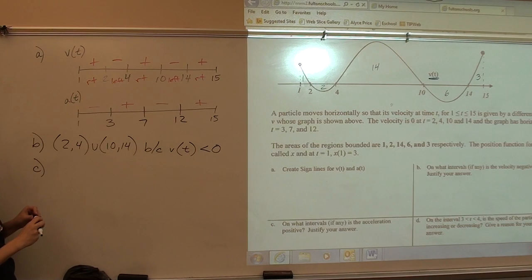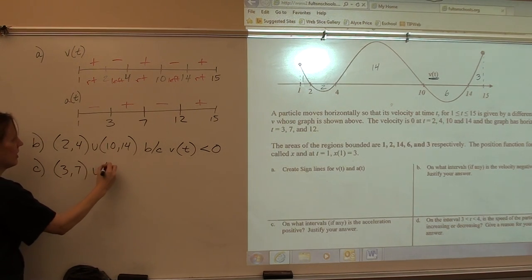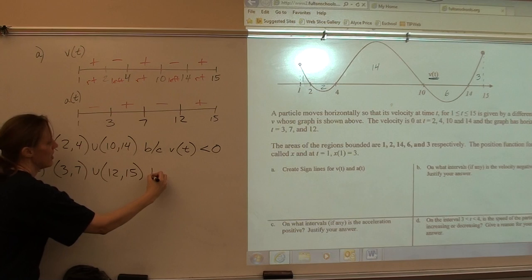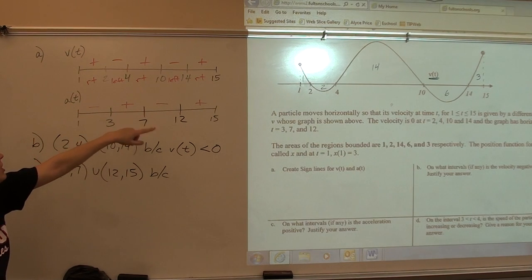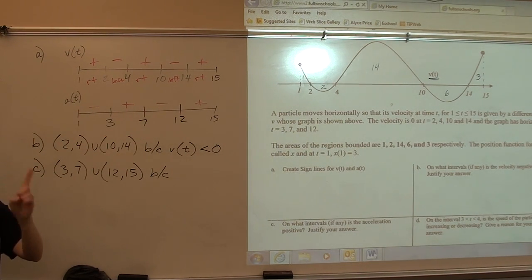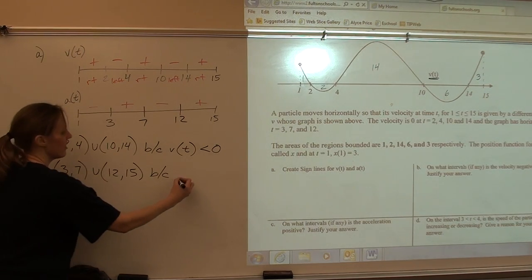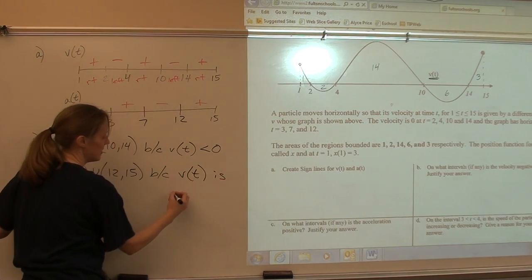So letter C, on what intervals is the acceleration positive? 3 to 7 and 12 to 15. Now, this one would be more likely an AP exam question, and this one you would have to put justification. Do not put because a of t is greater than 0. That's just saying acceleration is positive because it's positive. We want to say acceleration is positive because the velocity is increasing.